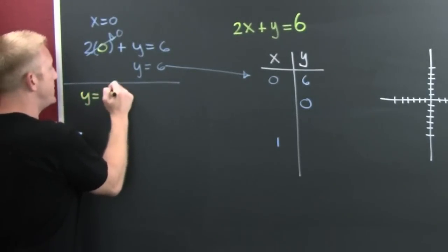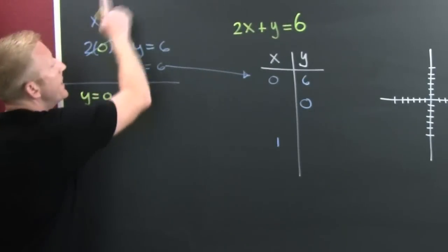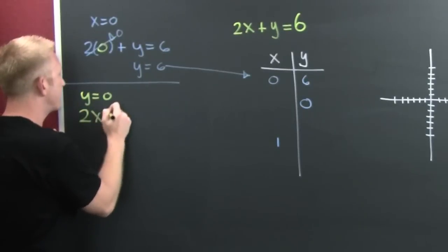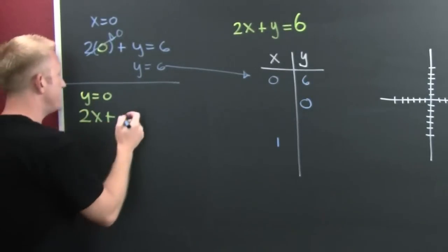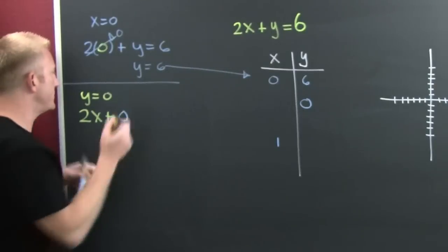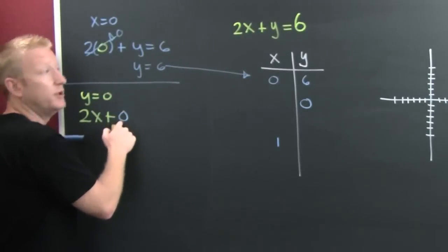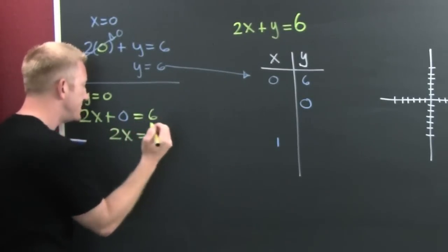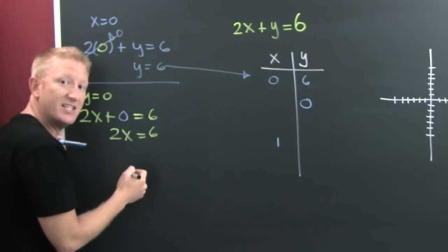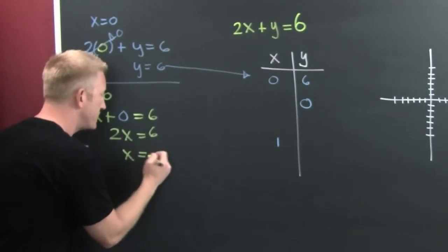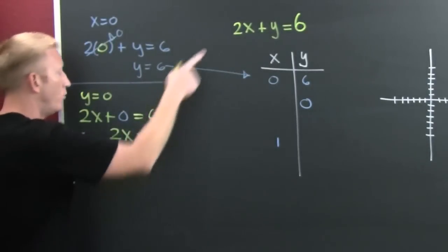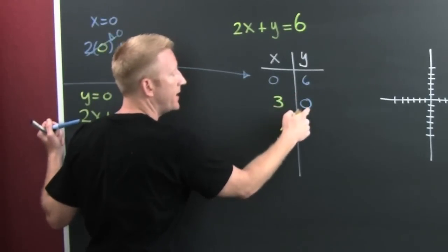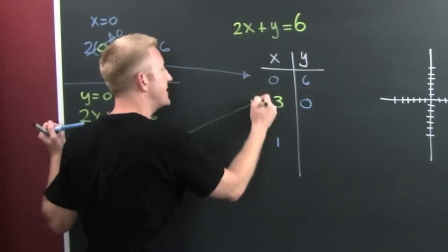Next, I let Y equal zero and throw that into the equation: two X plus zero equals six. So two X equals six — a little bit of division — and X turns out to be three. So when Y is zero, X is three, and we put that point right there.